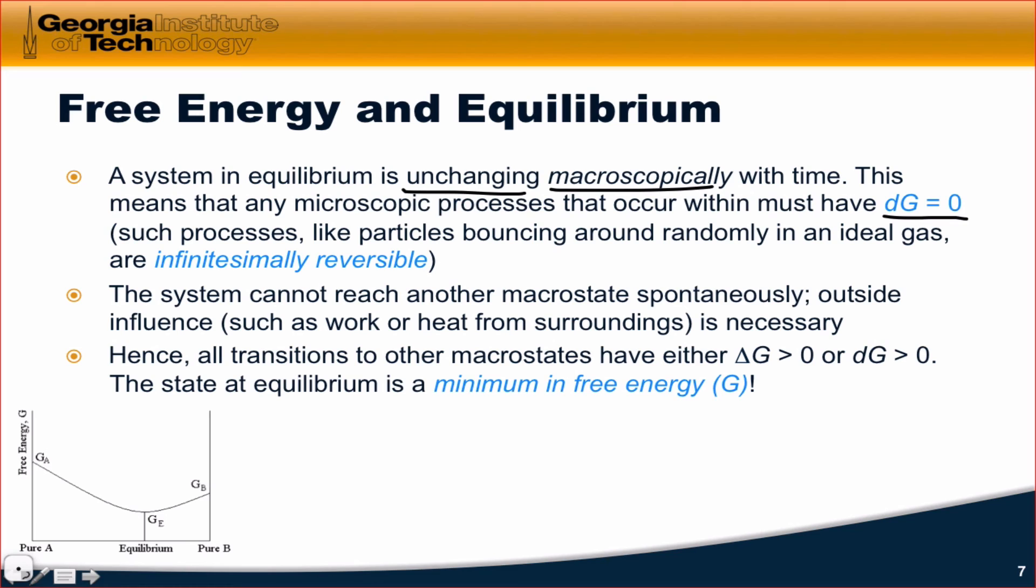That is, they must be perfectly reversible. Remember, this is a case where delta S of the system is equal to negative delta S of the surroundings such that the process is perfectly reversible and the total entropy change is 0. We can think of these processes as infinitesimally reversible. Things like particles bouncing around randomly inside an ideal gas. Those processes can be reversed because they correspond to DG equals 0.